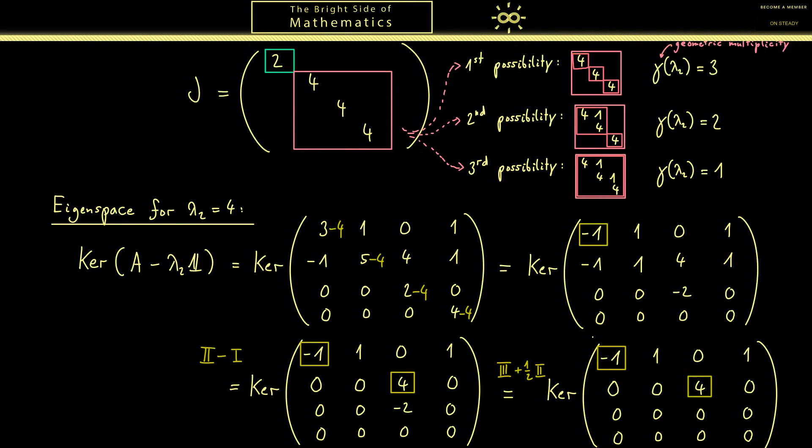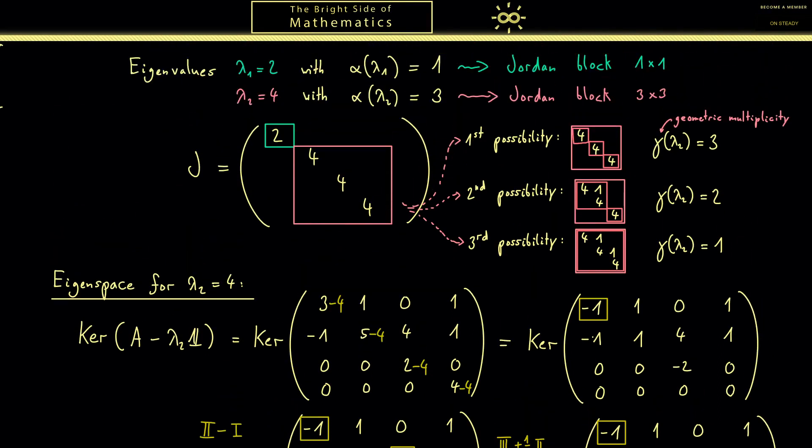Very good. Now we know the Jordan normal form for this matrix. In fact we are in the second possibility here. This means that the Jordan normal form has to look like this. And the only thing we can change is just the order of the blocks and the order of the boxes inside of this one block.